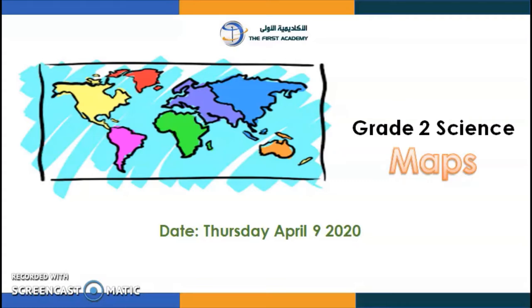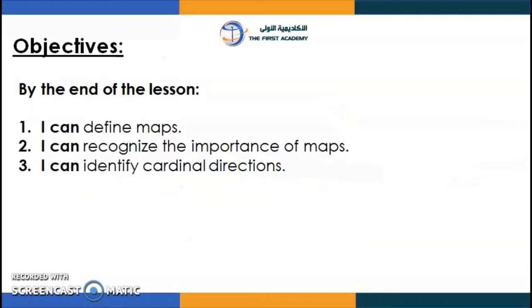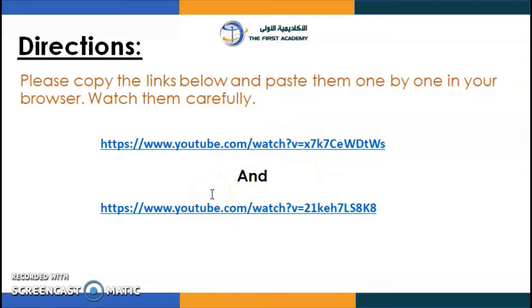Now let's go to the lesson. Look over here and tell me what you can see. A map — and on the map, our continents. Correct! This is a map, and today we will be talking about maps. So listen carefully. The objectives for today: by the end of the lesson you'll be able to define maps, recognize the importance of maps, and identify cardinal directions. Are you ready?